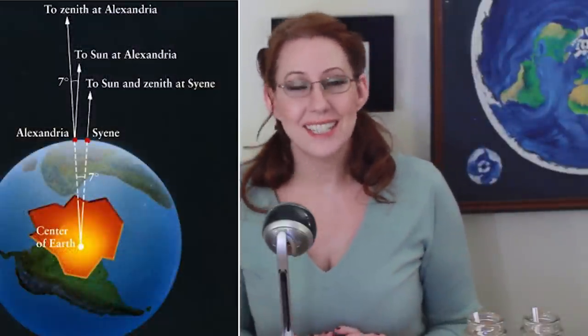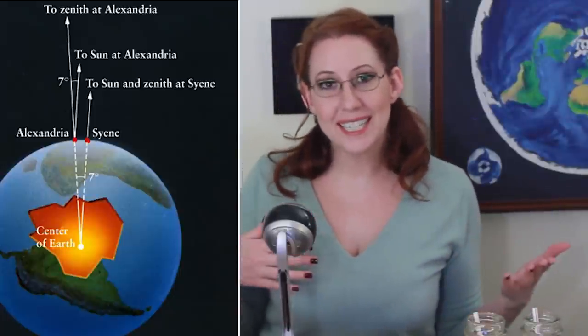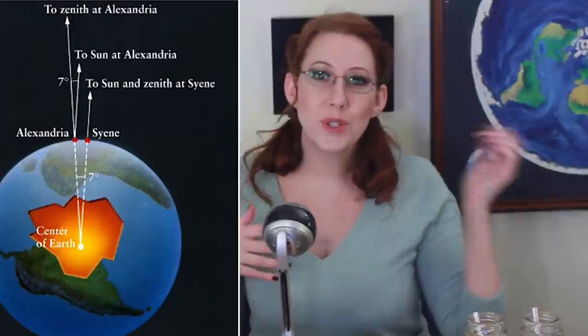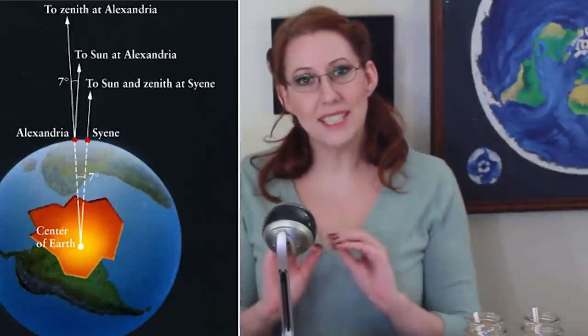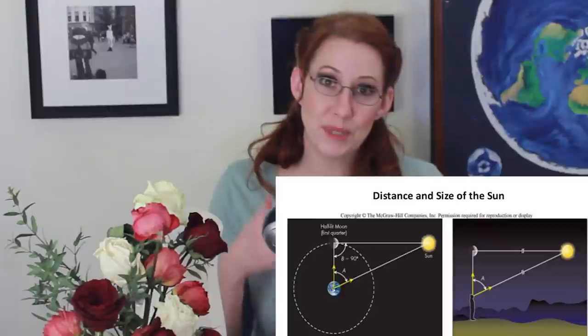Eratosthenes proved that the earth was a globe — apparently, or so it's said. How did he actually do this? He used geometry. He measured angles one year apart. He used the sun and the moon and Venus to calculate different data, then put these data together and drew conclusions. He proved that the earth was a globe — apparently, or so it's said. He proved the distance between the sun and the earth — apparently, or so it's said.